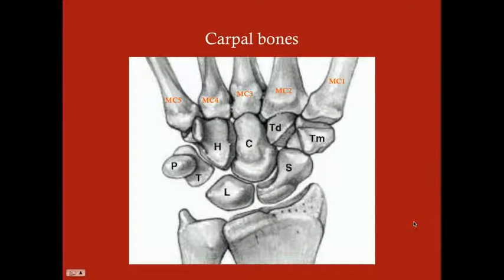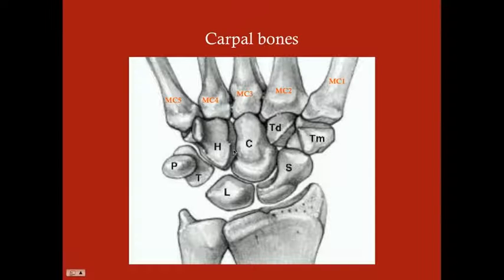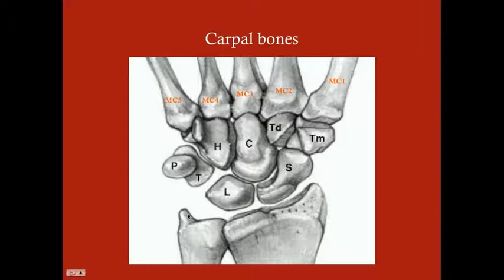The carpal bones can be confusing because their names don't really make obvious sense. It's important to remember these strangely named bones because when you read an X-ray you'll want to identify any fractures. When we talk about carpal tunnel syndrome, these bones are directly involved, so I'll introduce all eight.